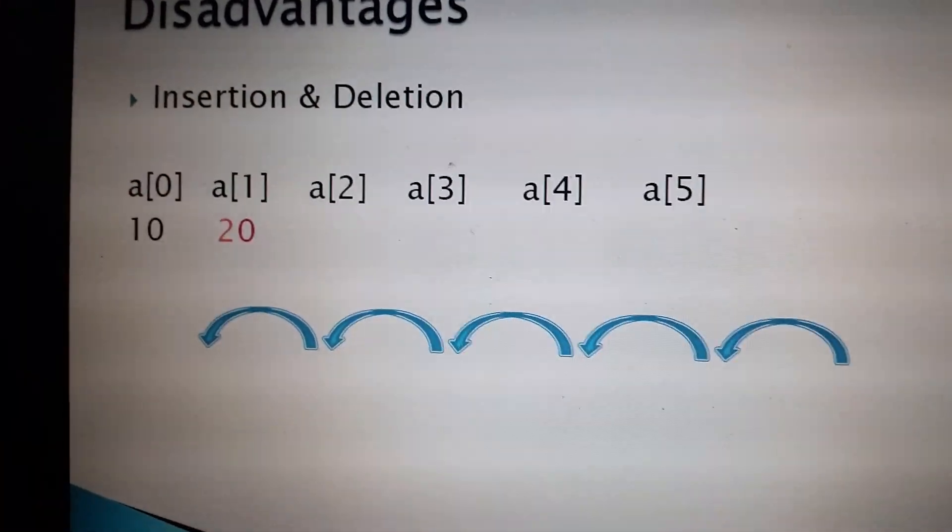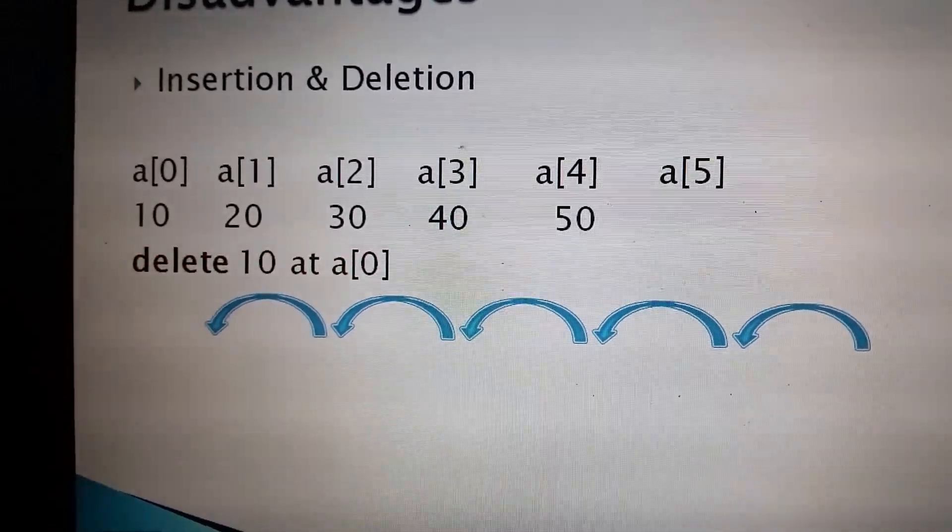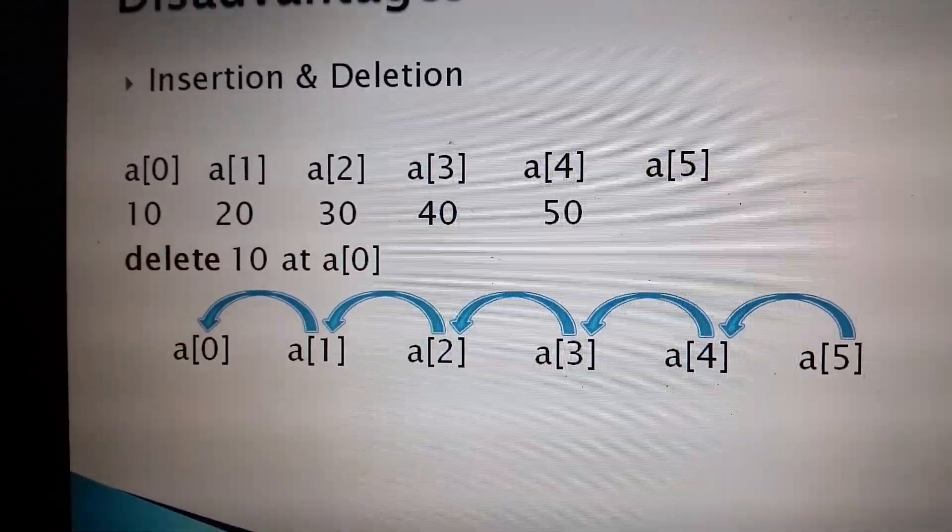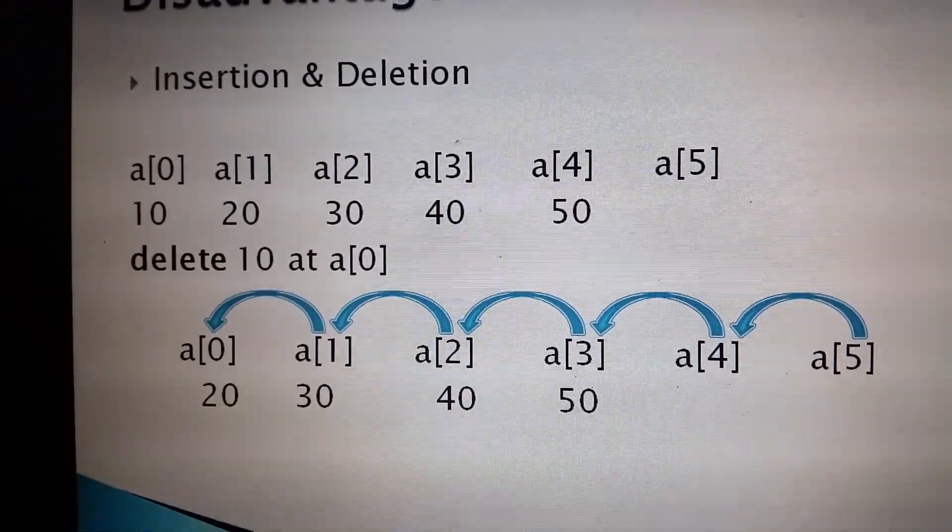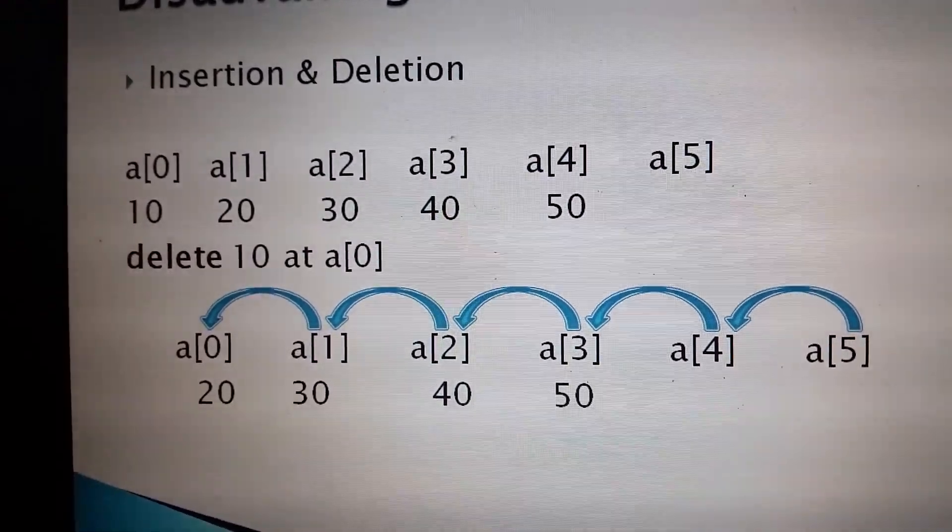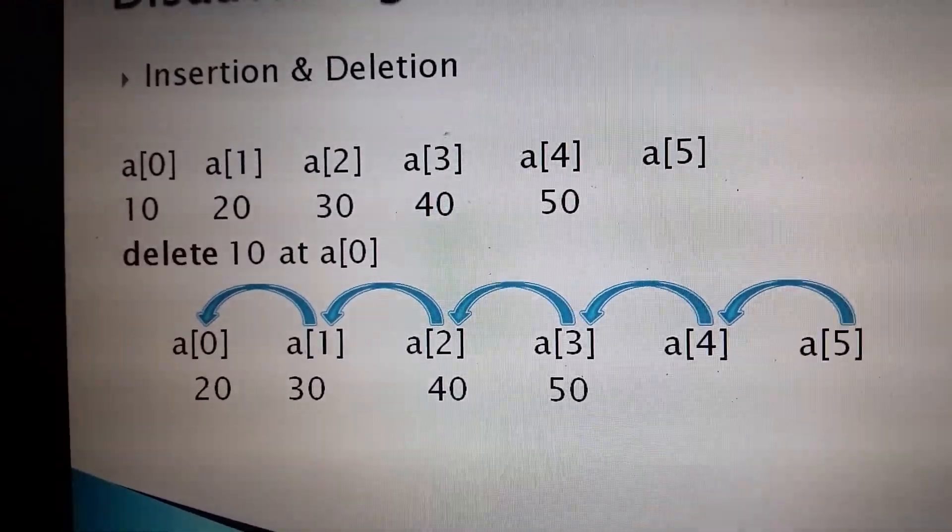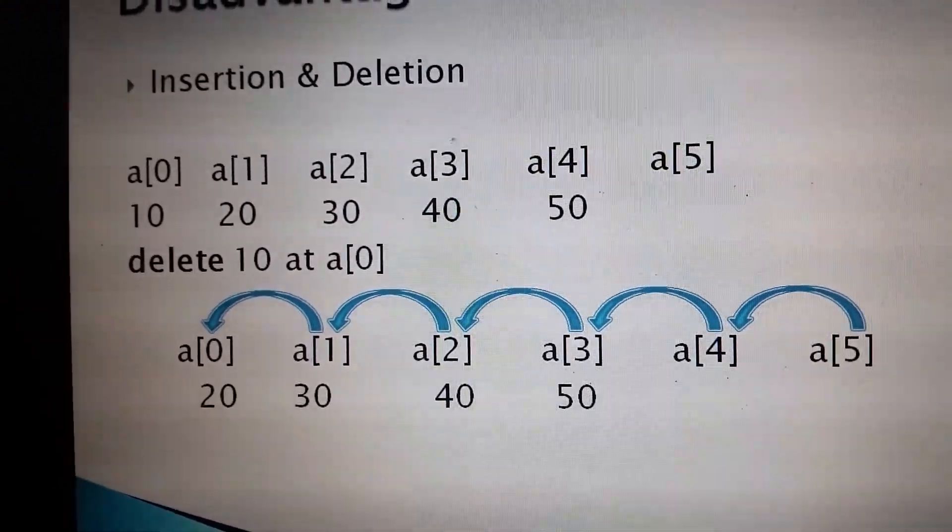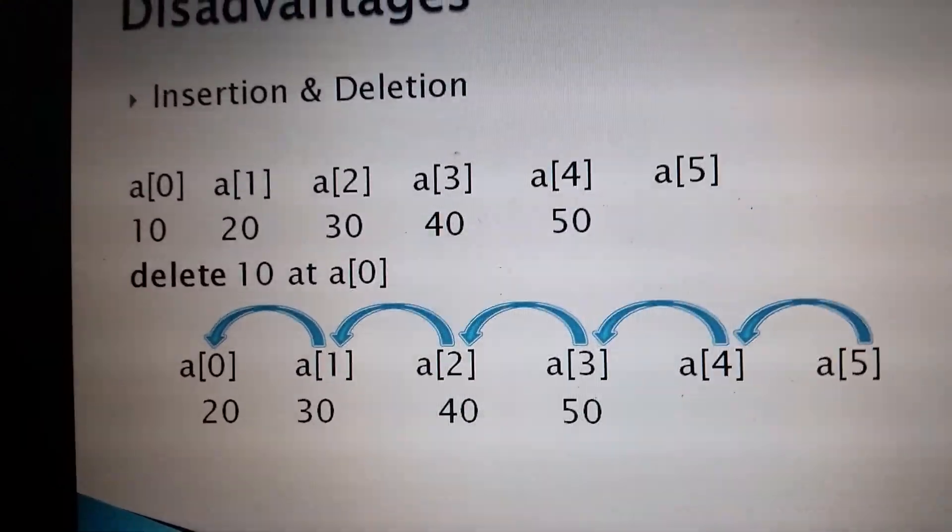For deletion, if we are going to delete 10 at array index 0, then 10 will be deleted and 20 will move, then 30, 40, and 50, and array indices 4 and 5 are now empty.